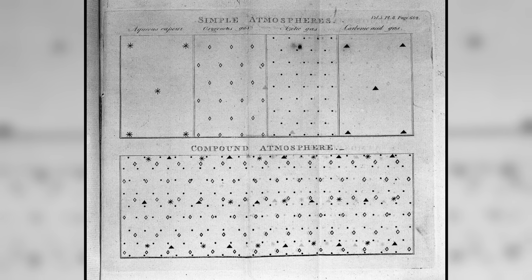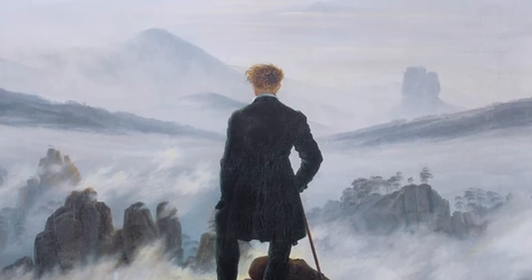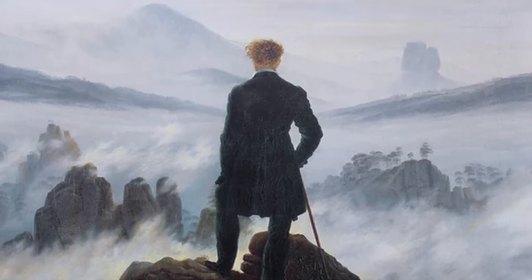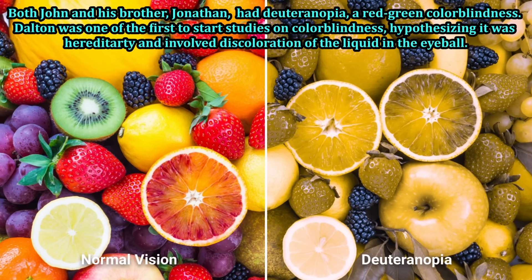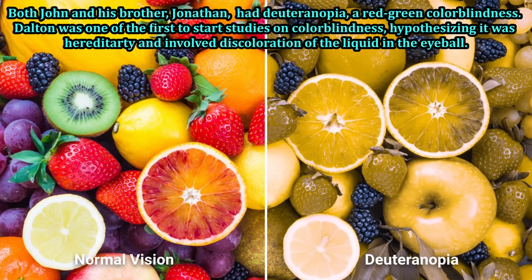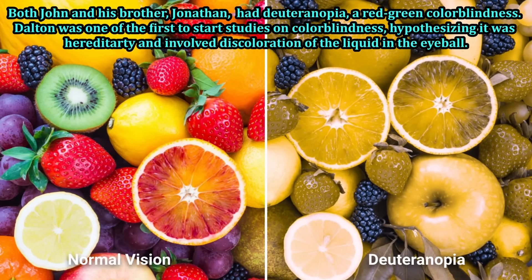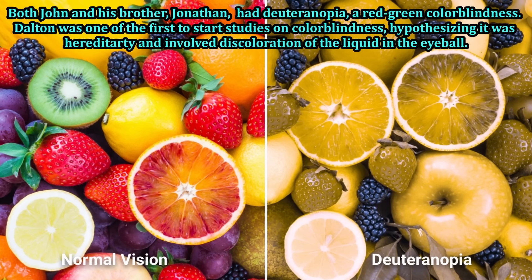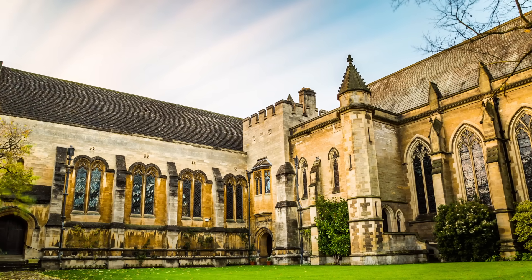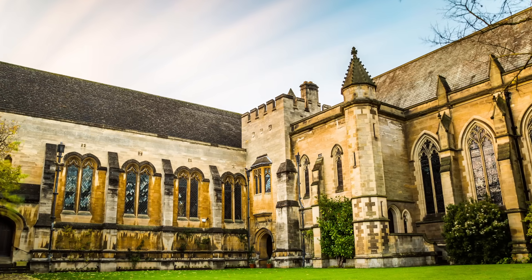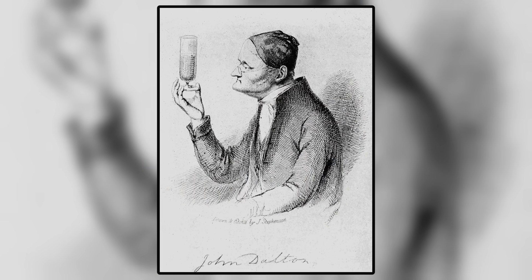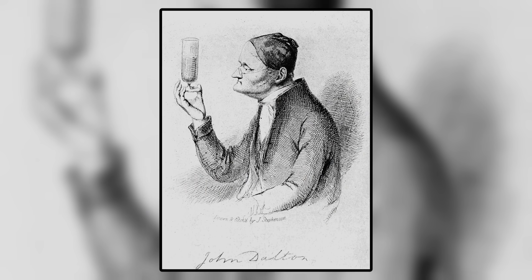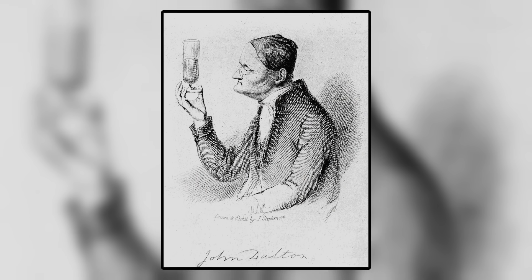During this time, he studied atmospheric circulation and hiked up mountains to measure temperatures and pressures at the summit, subsequently estimating the peak's heights. He then added studies in colorblindness and gas laws to his repertoire, starting in 1797 and 1800, respectively. Dalton worked as a professor at the predecessor of what is today known as the Harris-Manchester College at Oxford, teaching from 1793 to 1800, until he resigned due to the school's poor financial situation.